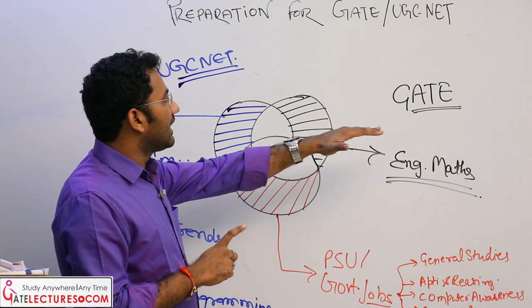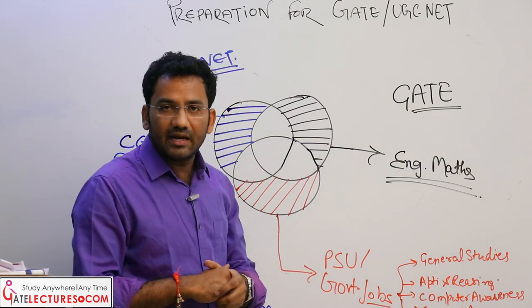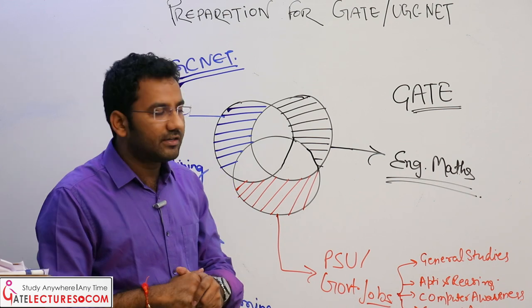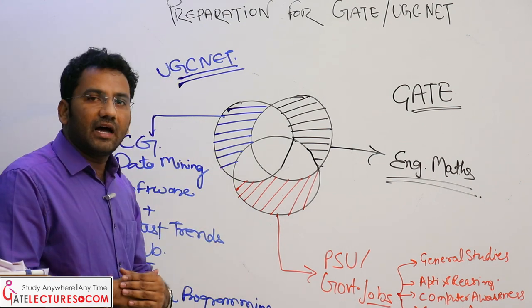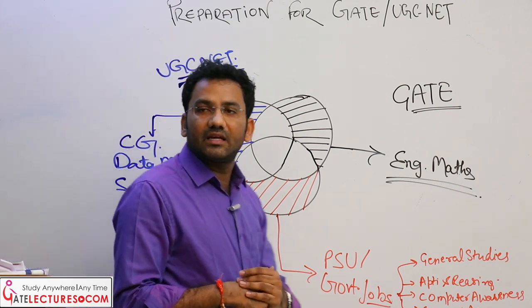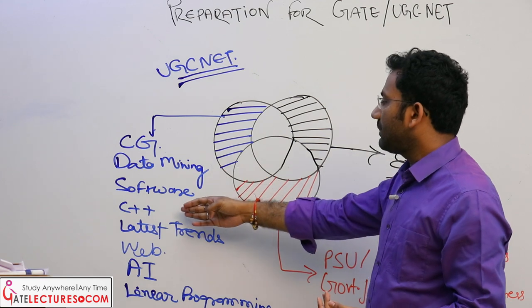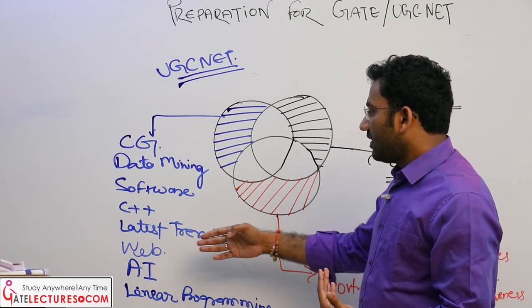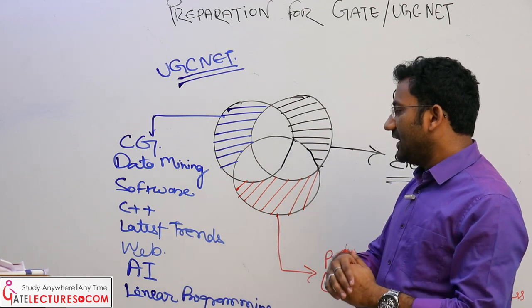For example, in GATE we have engineering math, which is not there in UGC NET. On the other hand, in UGC NET we have subjects like computer graphics, data mining, software, C++, latest trends, web technology, artificial intelligence, and linear programming.